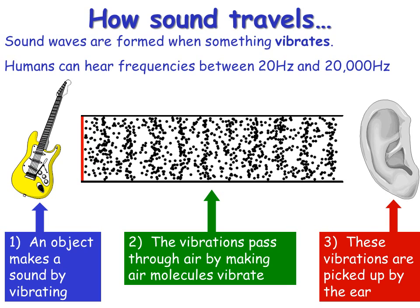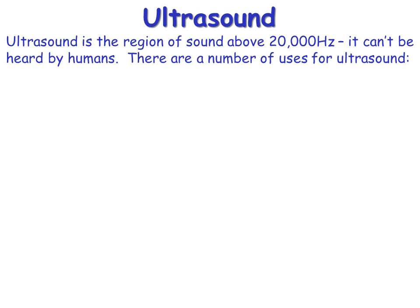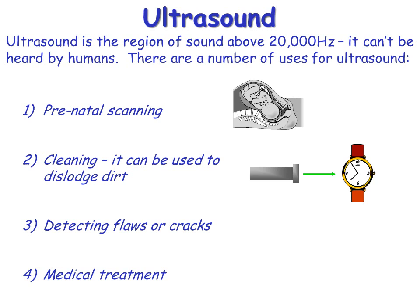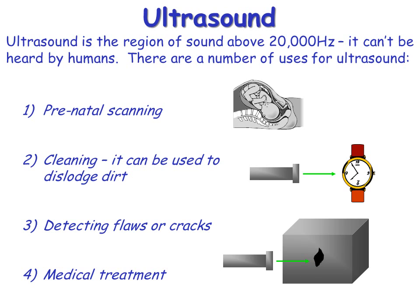When the vibration reaches the ear, it makes the eardrum vibrate, which sends a signal to the brain. If you go beyond 20,000 Hertz, you get into a region called ultrasound. Ultrasound has several uses: prenatal scanning, which is probably the most popular exam question, cleaning — where the very high frequency vibrations dislodge dirt and make it fall off — and also detecting flaws and cracks, as well as medical treatment.